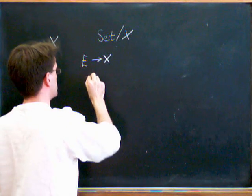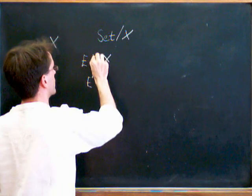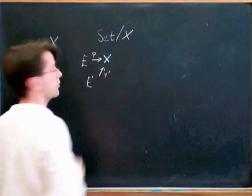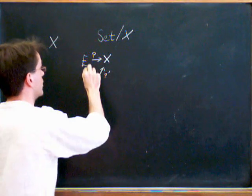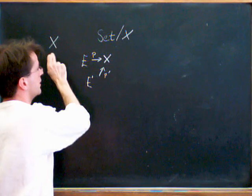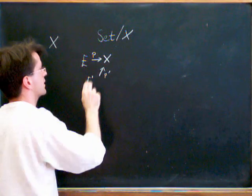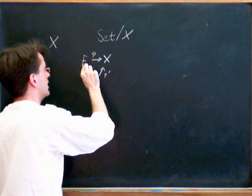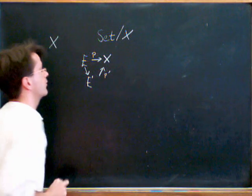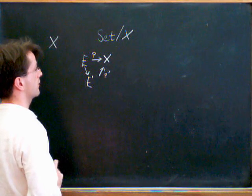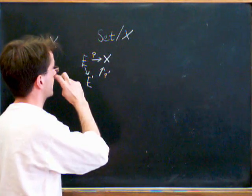And the morphisms are going to be sets. So if I have another one p-prime, another object in the category, an object in the slice category, which is a morphism in the original category of sets going to X, then a morphism from E to E-prime is a morphism from E to E-prime which makes that diagram commute. So that's the slice category.